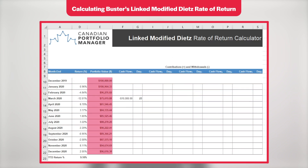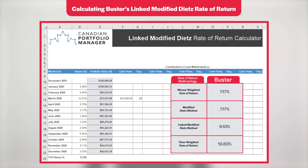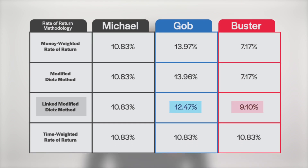We'll follow the same process for Buster. After entering his month-end portfolio values into the spreadsheet and including his negative $10,000 withdrawal on March 23rd, we arrive at a linked modified Dietz return of 9.1%. Once again, his results fall about halfway between his money-weighted return of 7.17% and his time-weighted return of 10.83%.